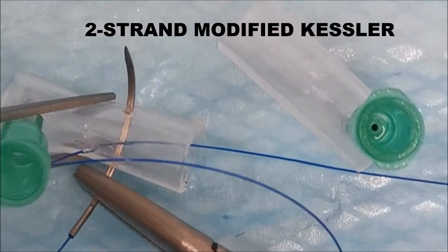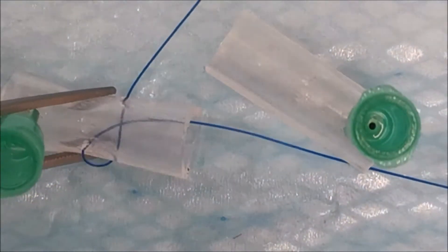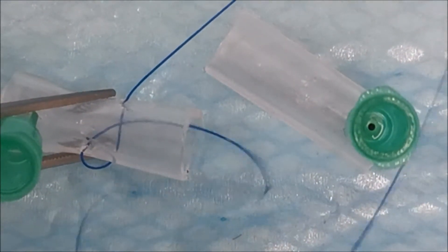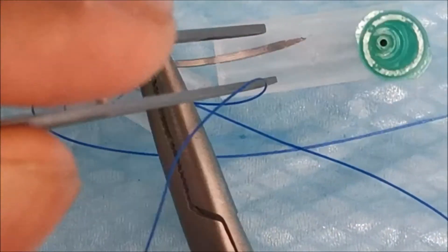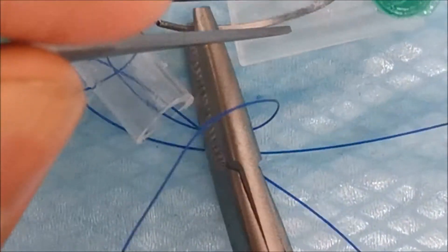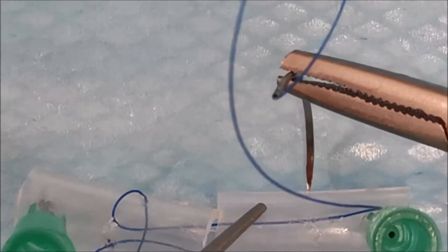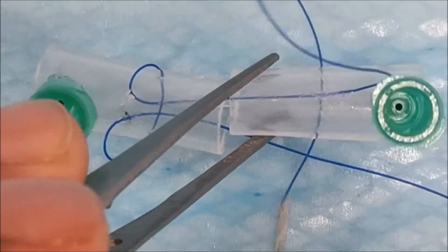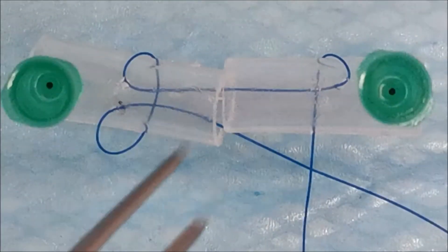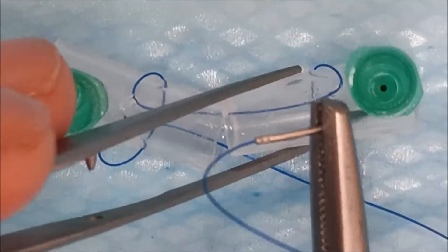We'll demonstrate the same technique with a hollow tube so you can see what it looks like on the inside. The transverse bite has just been taken and the longitudinal bite. You can see that the transverse bites cross the longitudinal bites and create a locking grasping loop which grasps a few of the tendon fibers.